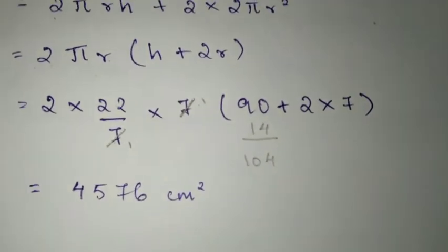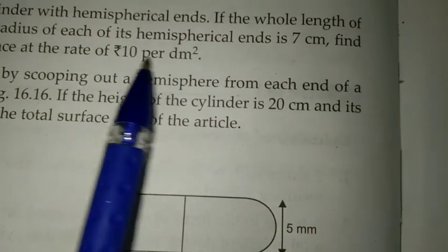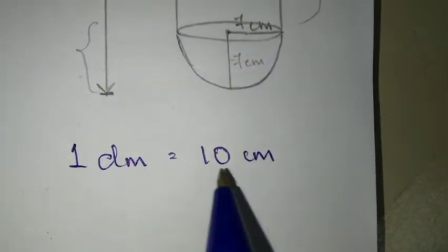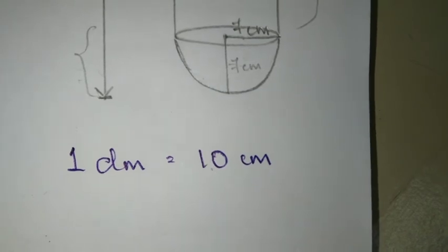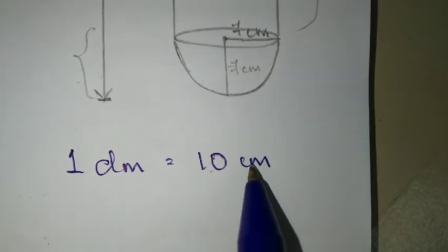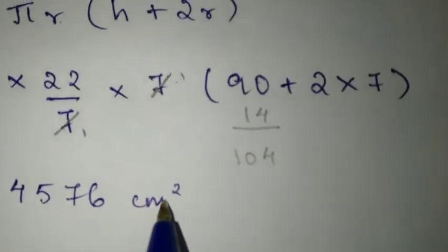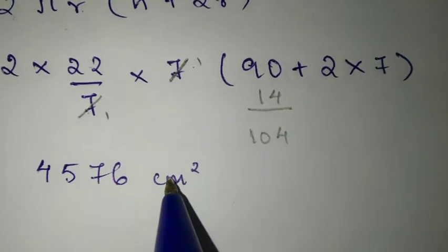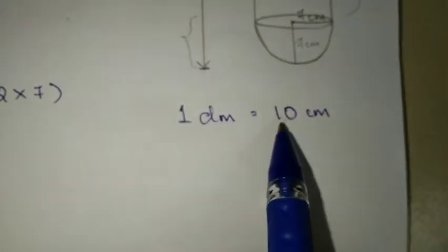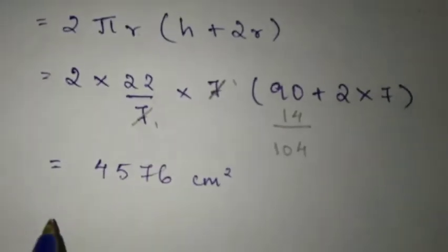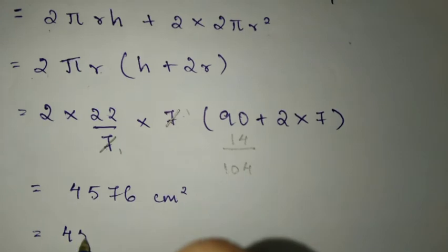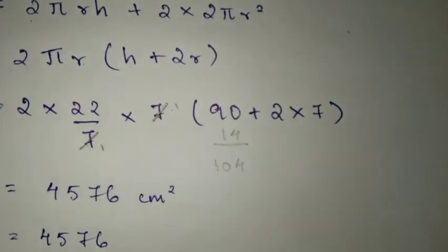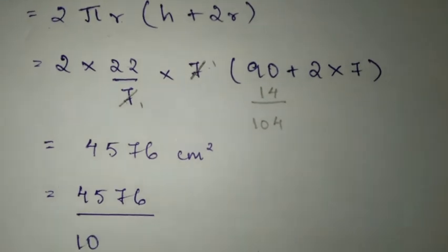Now we are getting the surface area in terms of centimeters, but in the question they've given us in terms of decimeter square. One thing I want you to know is 1 decimeter is equal to 10 centimeters. When we divide by 10, and since it's square, we need to divide by 10 times 10. So we divide 4,576 by 100 to convert to decimeter square.